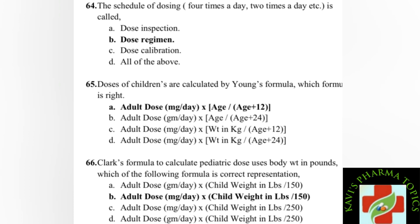Next question: schedule of dosing — what is this called? A dose regimen refers to how a dose is administered — for example, two times a day or four times a day. Option A: dose inspection. Option B: dose regimen. Option C: dose calibration. Option D: all of the above. Dose regimen is the right answer — it refers to the recommended schedule such as twice or four times daily.